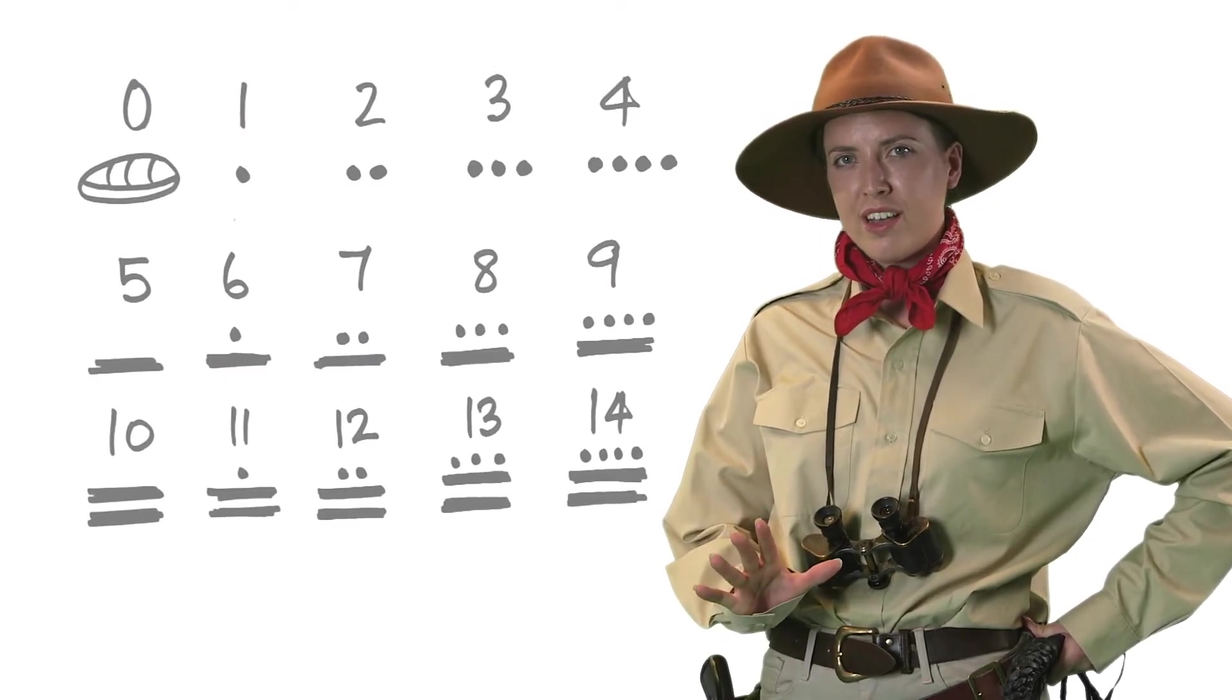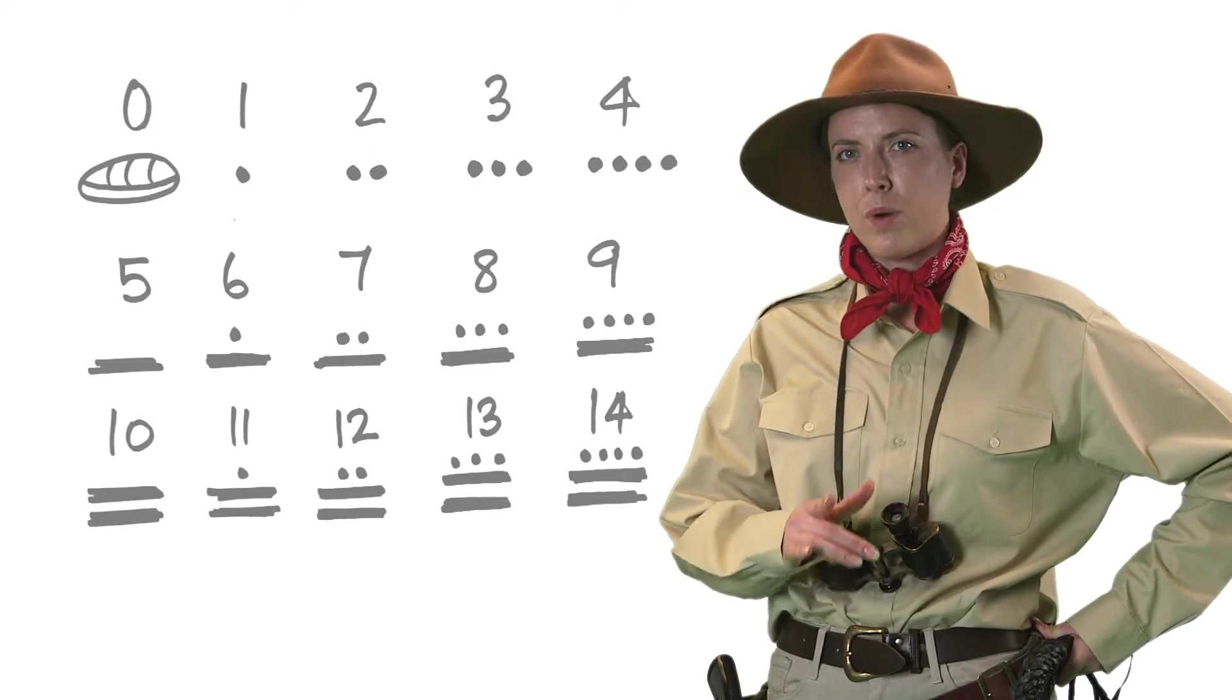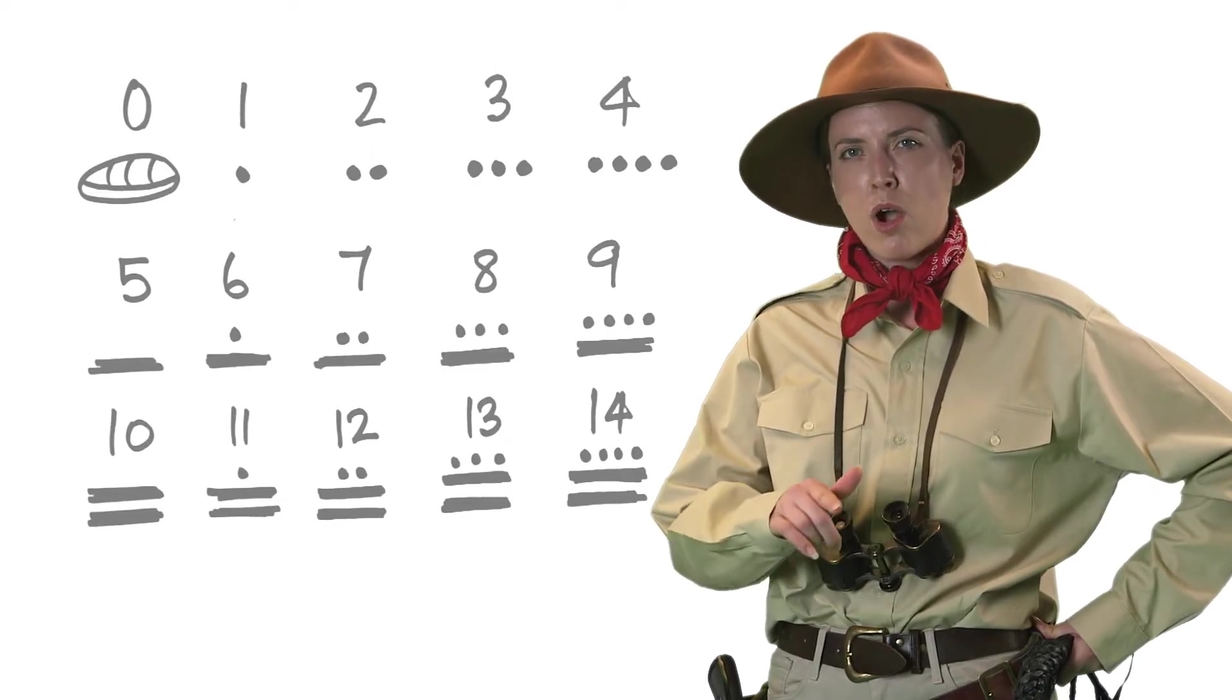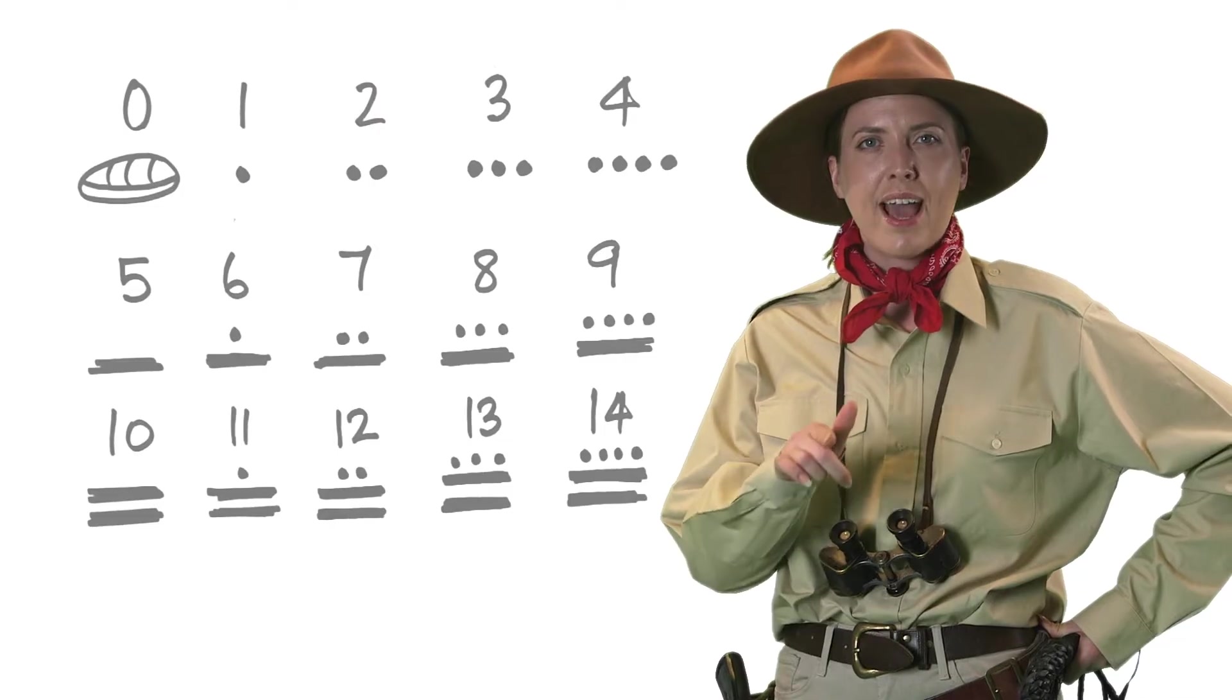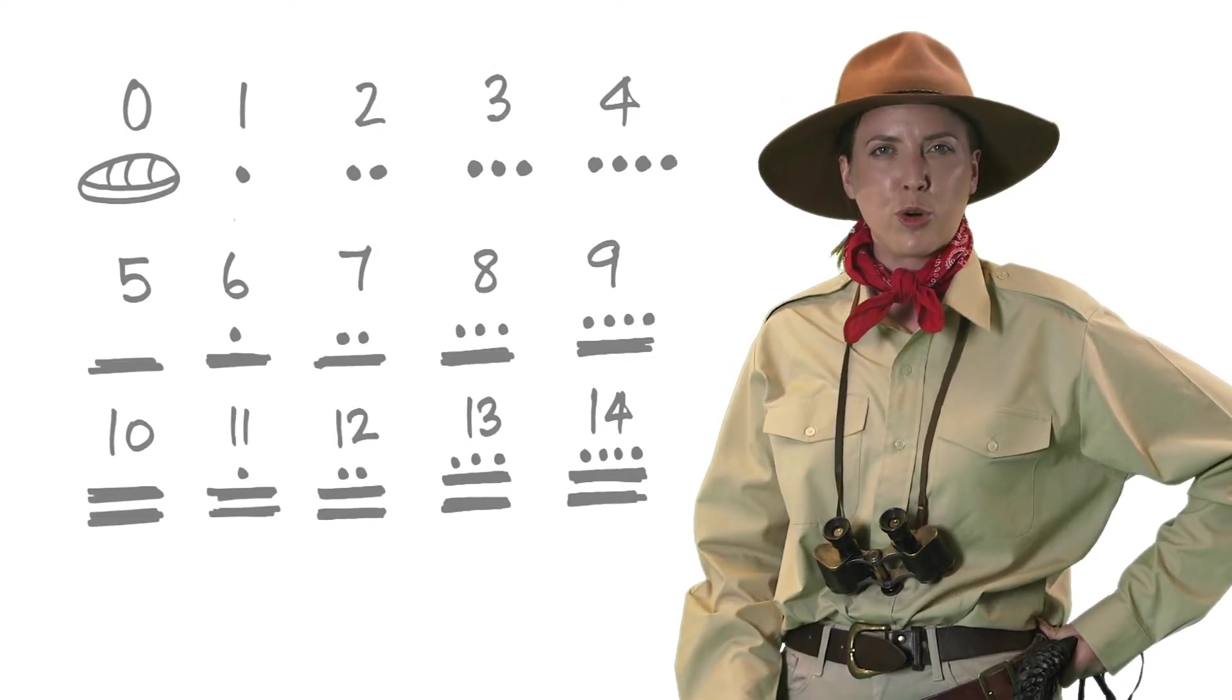But five is represented by a rectangle called a bar. For six, you have a bar with one dot above it. For seven, a bar with two dots above. Eight has three dots and nine has four.